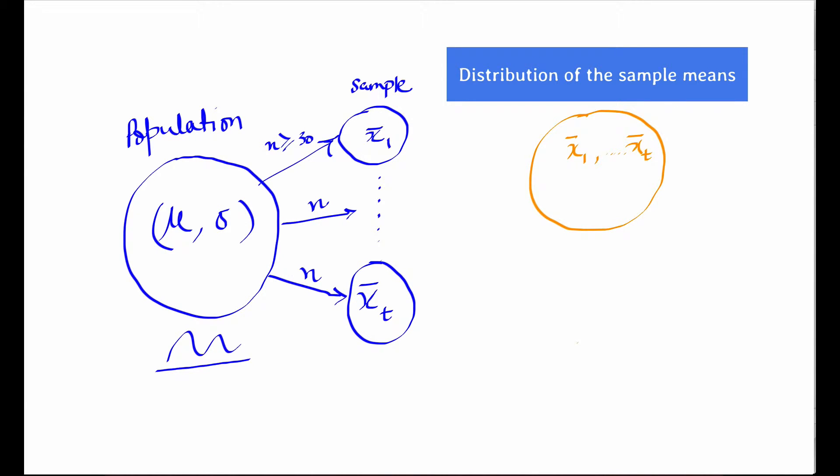So the central limit theorem states that for simple random samples of size n from a population with a mean mu and a standard deviation sigma, the sampling distribution of the various samples drawn from this population approaches a normal probability distribution with a mean of mu and a standard deviation of sigma over root n. And this number is referred to as the standard error of the sample mean.